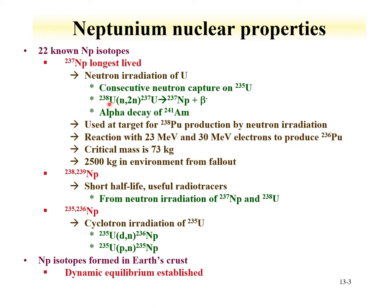There's also an n,2n reaction on uranium-238 creating uranium-237, which then beta decays to neptunium-237. And lastly, in the nuclear fuel cycle, you can have formation of americium-241 from the beta decay of plutonium-241. The alpha decay of americium-241 creates neptunium-237. One of the main uses of neptunium-237 is for the formation of plutonium-238, which is a very good heat source for producing batteries that can be used for remote applications such as space exploration.